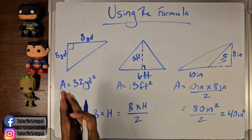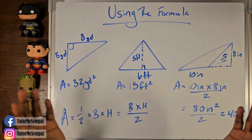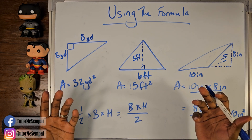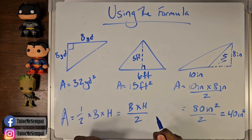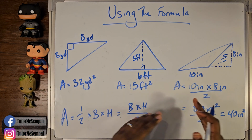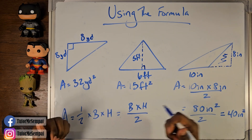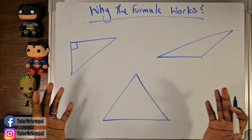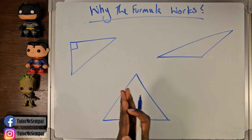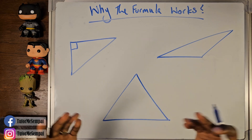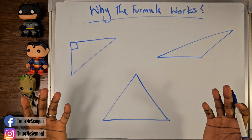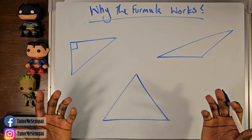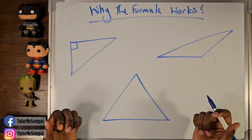So as long as you have your base and your height, you multiply those together, divide by 2, and that's going to be the area for your triangle. But now that we've talked about how to use the formula, let's jump into why this formula works.